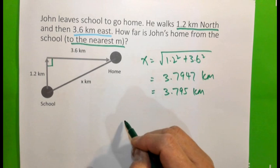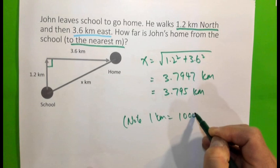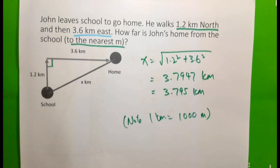To the nearest metres is 3.795 kilometres, 3 decimal places. Remember, 1 kilometre equals 1,000 metres.